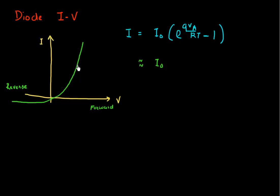If I apply a voltage in the positive direction, the slope of this, which is the resistance, is essentially very low. And if I apply a voltage in the reverse bias direction, the current barely changes as a function of the voltage, and this resistance is very high. This non-linearity in the resistance is what makes the diode a very good rectifier and so on.